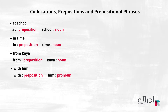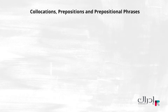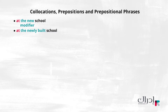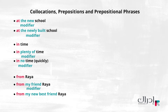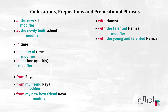The object of the preposition often has one or more modifiers to describe it. Look at these examples: 'at the new school,' 'at the newly built school,' 'in time,' 'in plenty of time,' 'in no time' — which means quickly — 'from Raya,' 'from my friend Raya,' 'from my new best friend Raya,' 'with Hamzeh,' 'with the talented Hamzeh,' 'with the young and talented Hamzeh.'